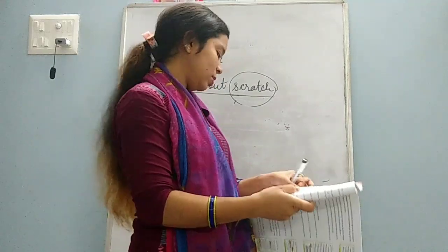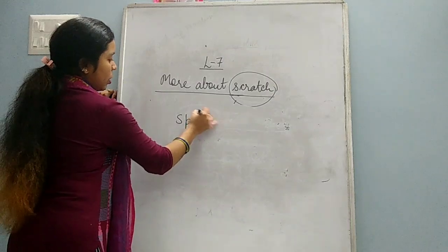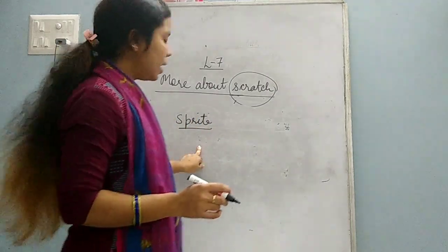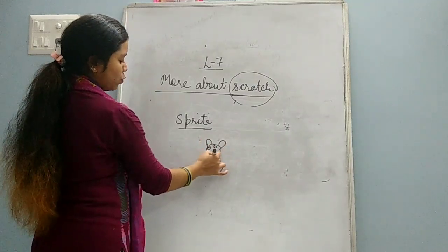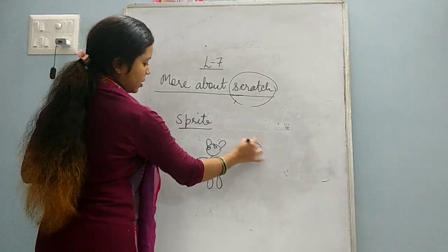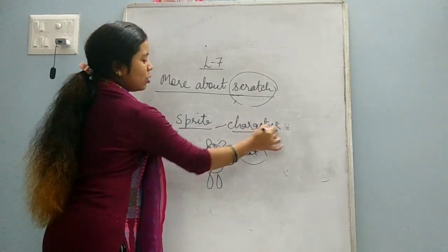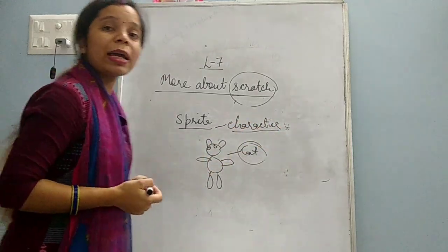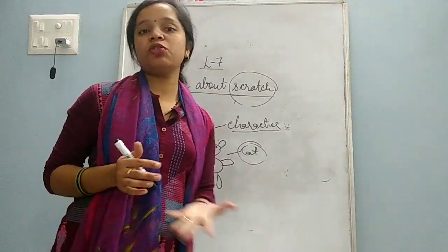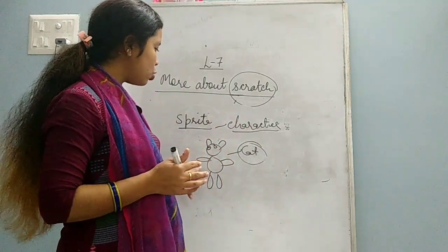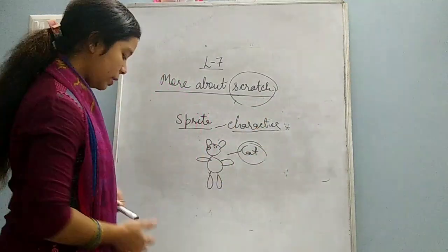Now, the first component given is sprite. What is this sprite? Sprite is simply one cat in scratch - that is called sprite. Sprite is known as a character, like you have seen different cartoon characters, sprite is also a character in scratch. And it works according to the instructions given. What instructions we give to this cat, according to that this sprite will work.